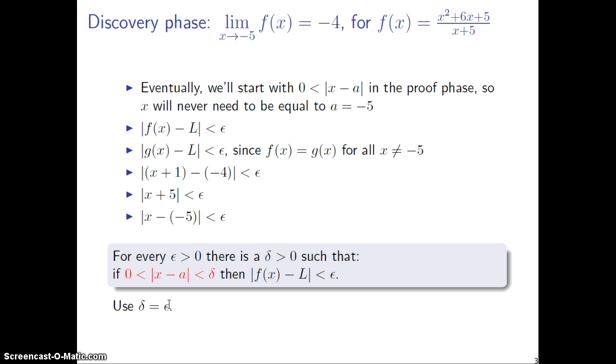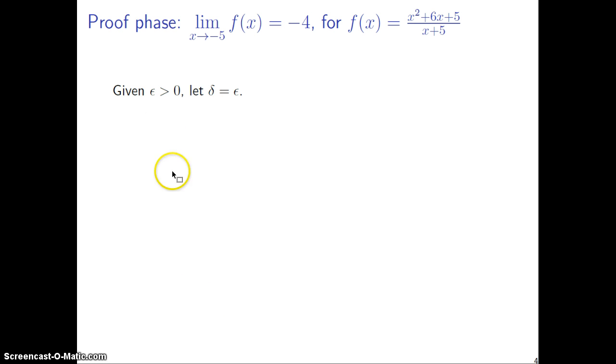All right. So we've, in the discovery phase, seen what delta we should use for a certain number of epsilon. The number corresponding to delta for a particular epsilon is epsilon itself. Okay. So if somebody gives us an epsilon, we'll use delta equal to epsilon.